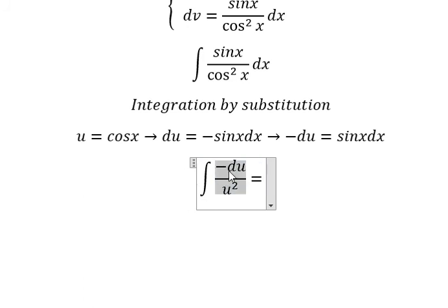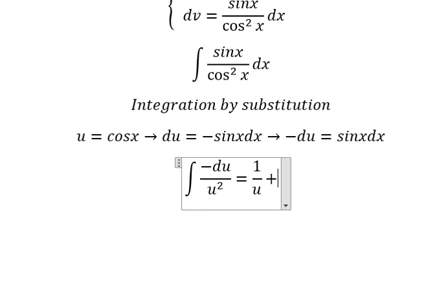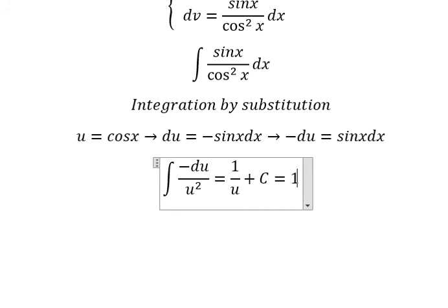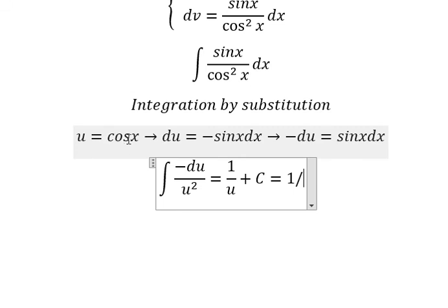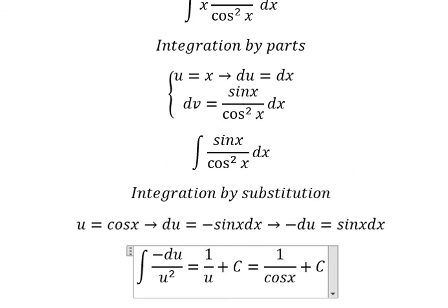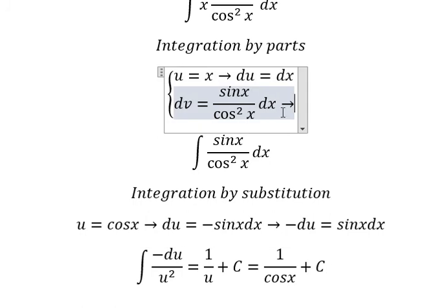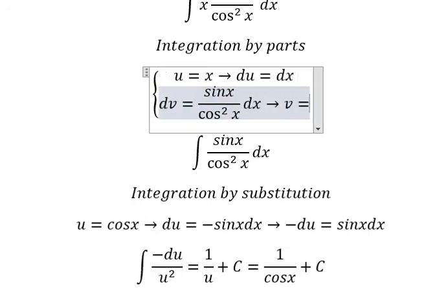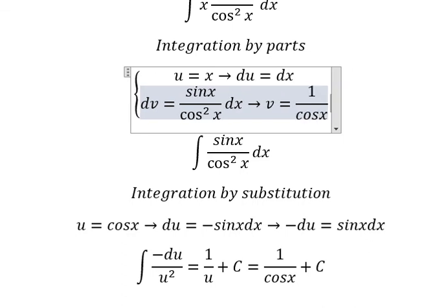The integration of this one, we have 1 over u. And I will put c. Now we go back. The integration of this one, we have v equals to 1 over cosine x.